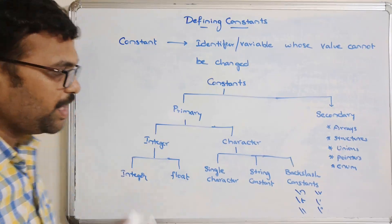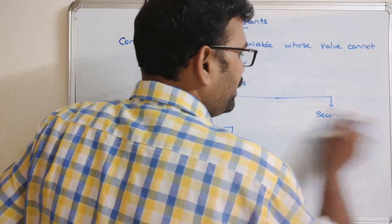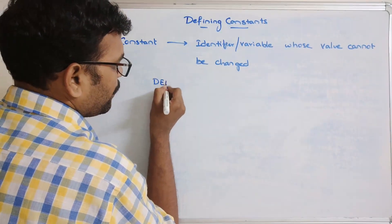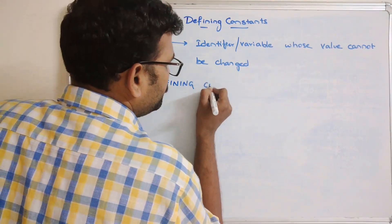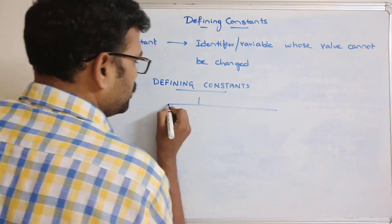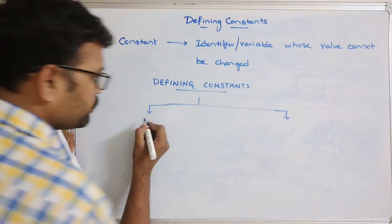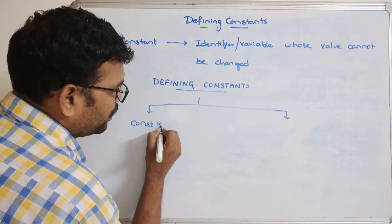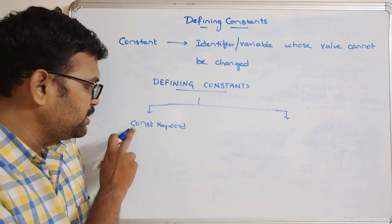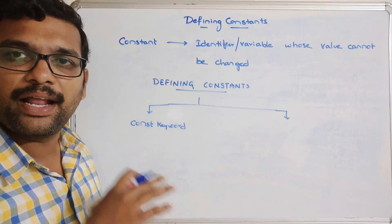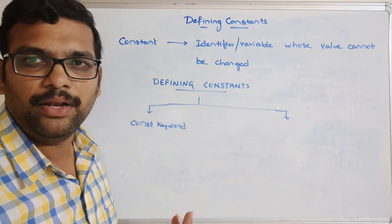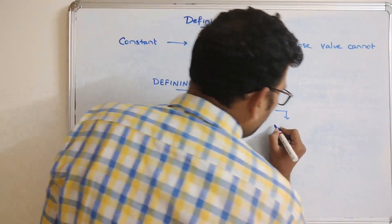Now, how to define a constant in a C program. Defining a constant is done in two ways in C programming. The first way is by using the 'const' keyword while declaring a variable. If you declare any variable using the 'const' keyword, that variable will be considered as a constant — we can use it in expressions but we can't update its value.